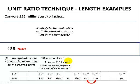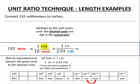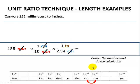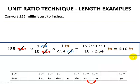We multiply by our unit ratios until the desired units are left in the numerator. Since we have two equivalences, we'll have two unit ratios. First, multiply by one centimeter over 10 millimeters to eliminate millimeters. Then multiply by one inch over 2.54 centimeters to eliminate centimeters. The millimeters cancel top and bottom, the centimeters cancel top and bottom, and we're left with just inches. Gathering numbers: numerator is 155 × 1 × 1; denominator is 10 × 2.54. Final answer: 6.10 inches.